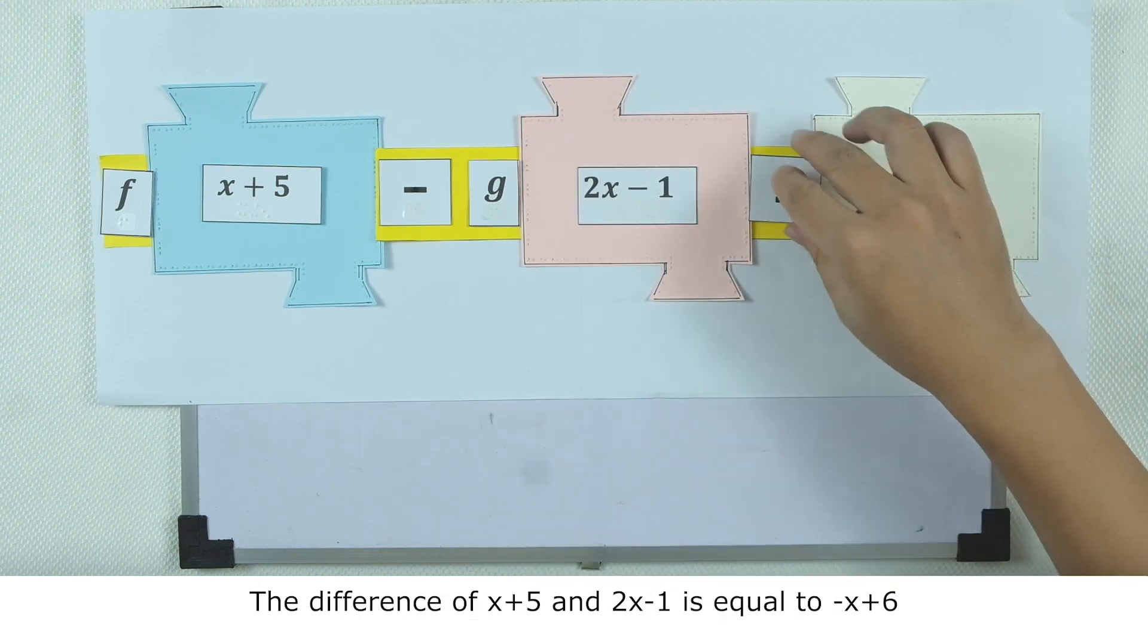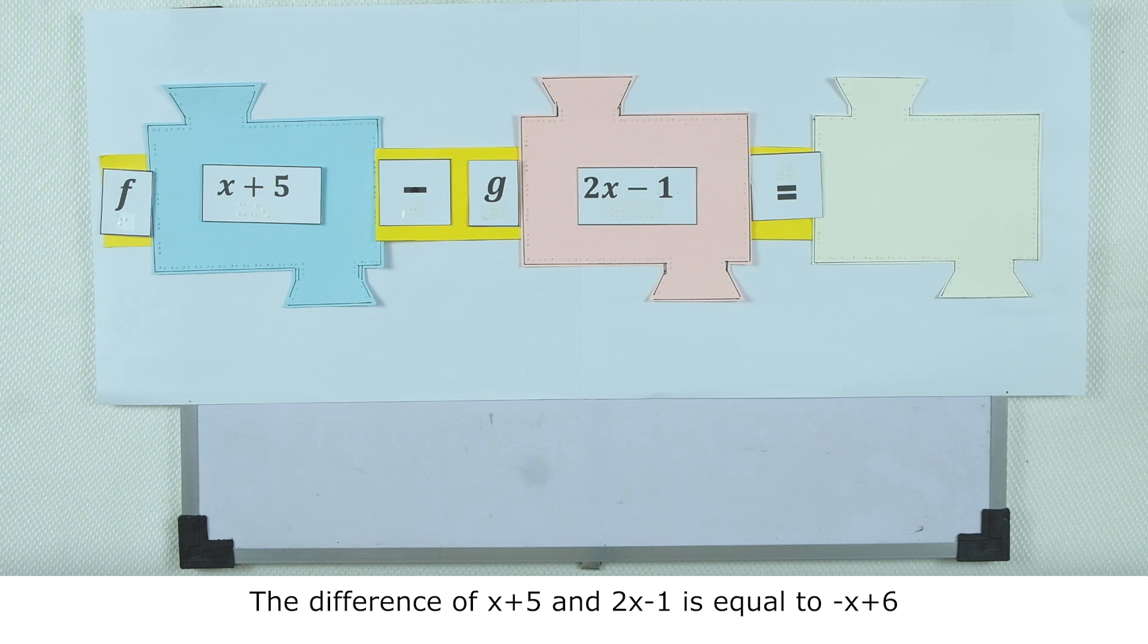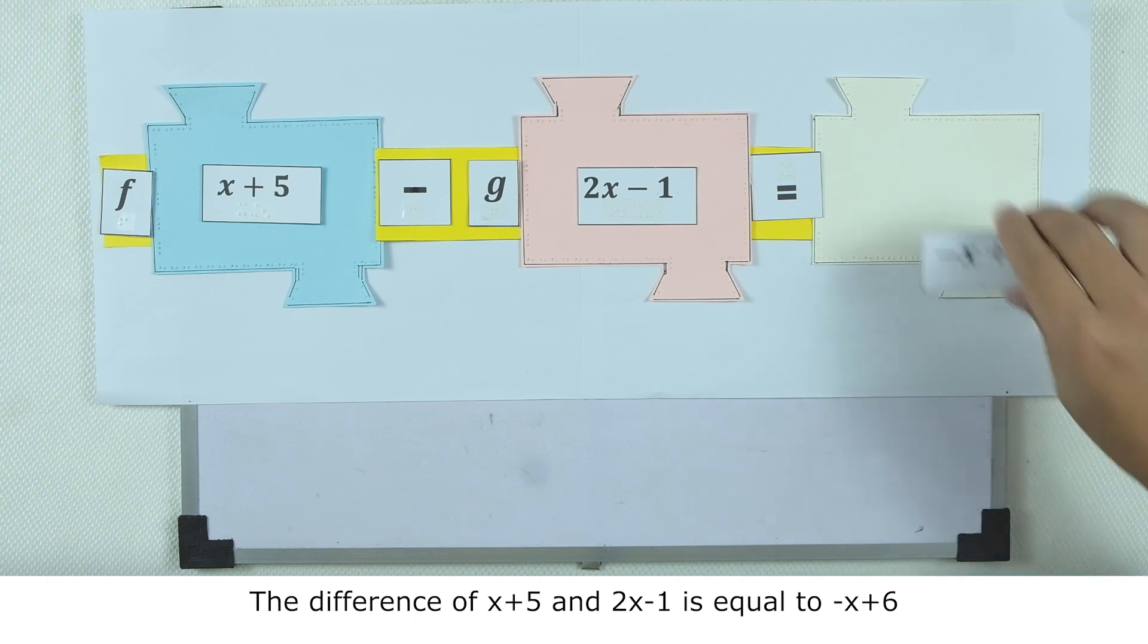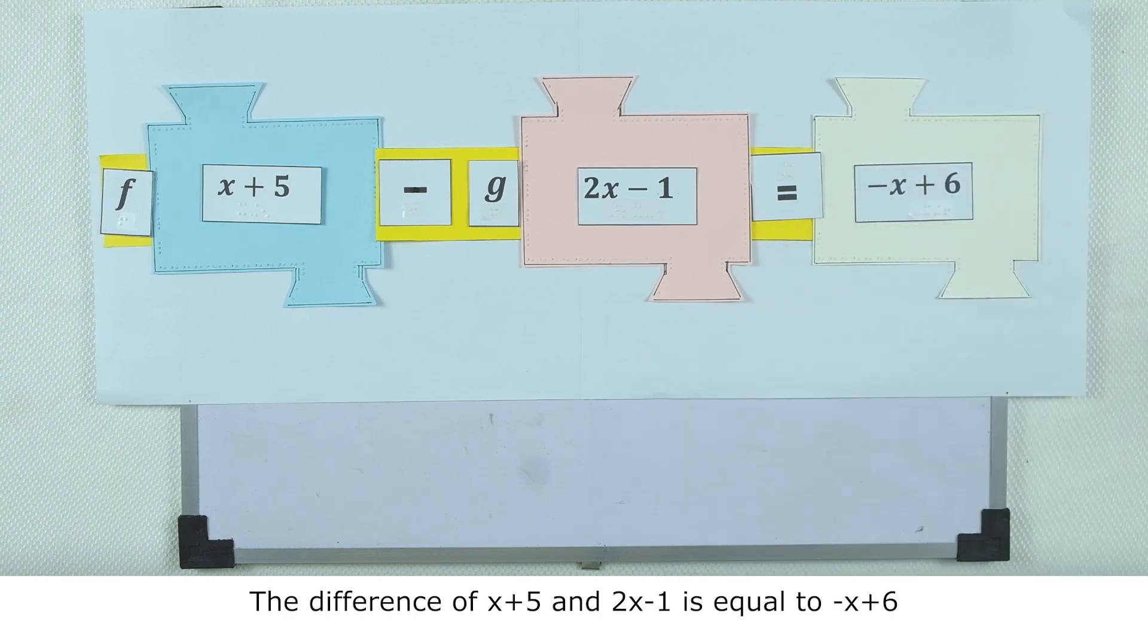Therefore, x plus 5 minus the quantity 2x minus 1 is equal to negative x plus 6. Let us go to the second function.